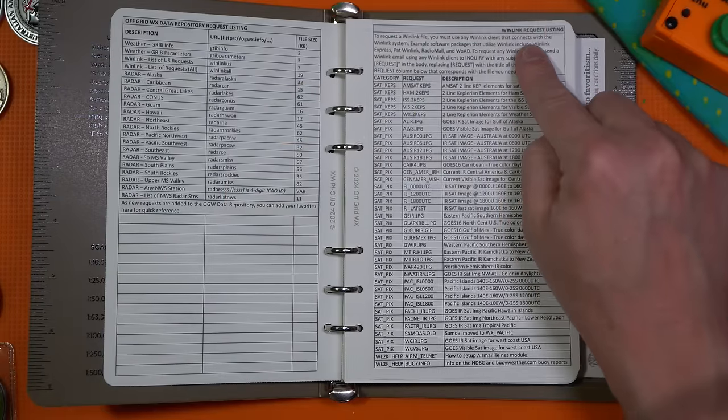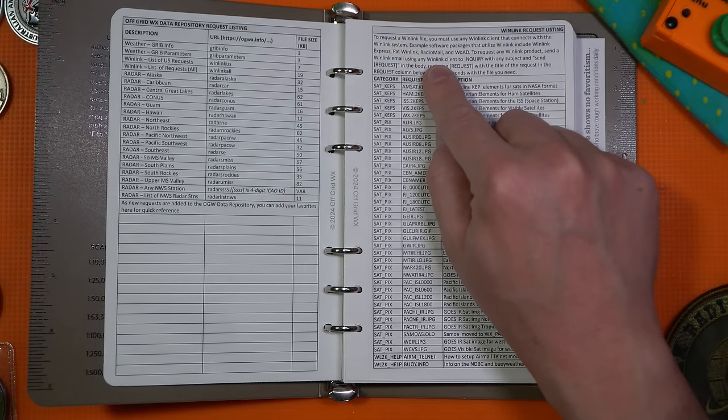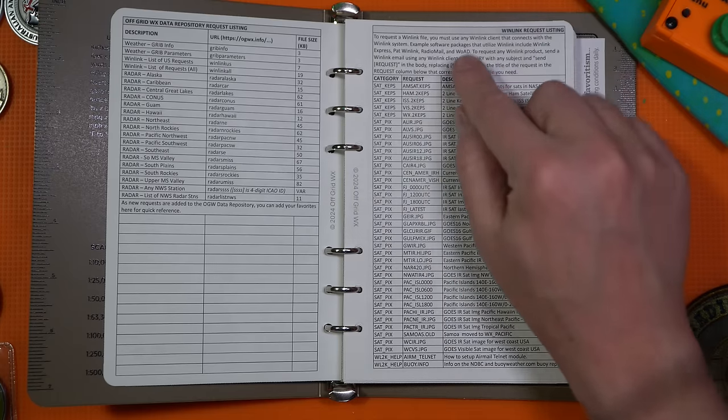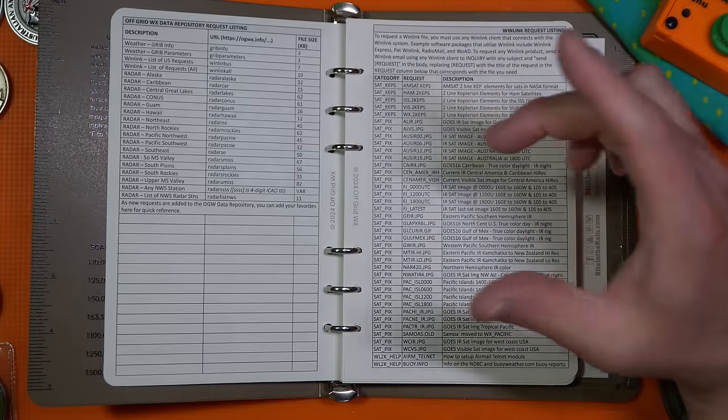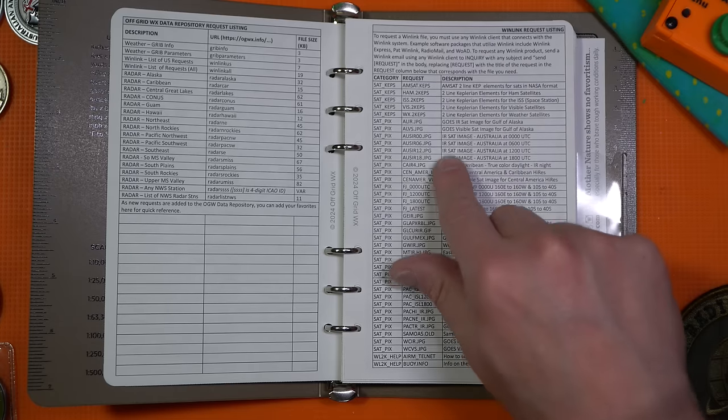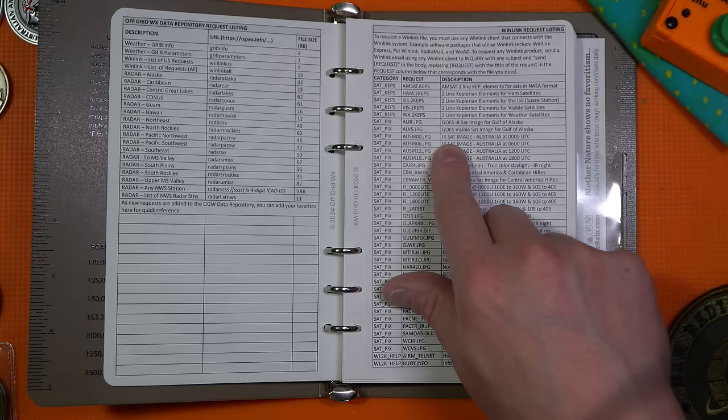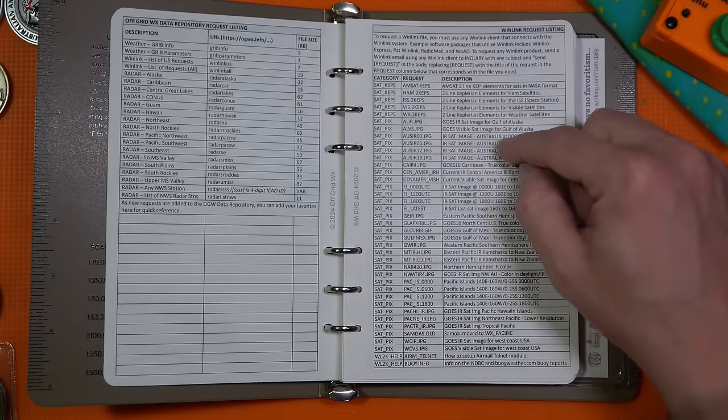Continuing down the Winlink request listing, if you send inquiry with your Winlink client, so you're on your computer or you're using Woad or whatever, you can actually get pictures from NOAA, it looks like. Let's see. Oh, it's an IR sat image. You can get Keplerian elements. But check this out. You can get a picture of Australia.